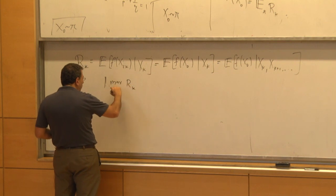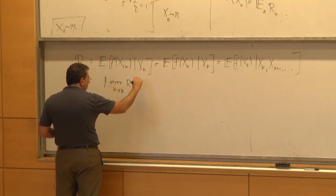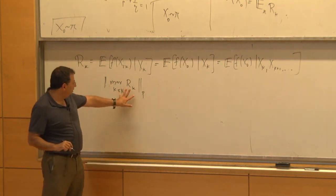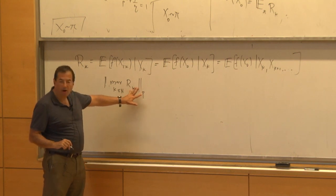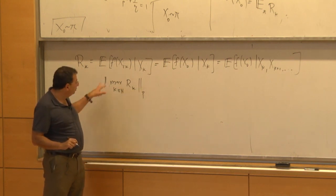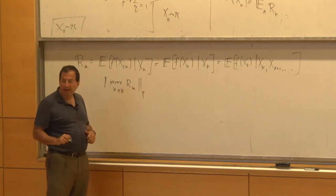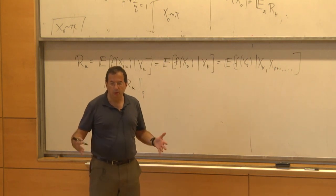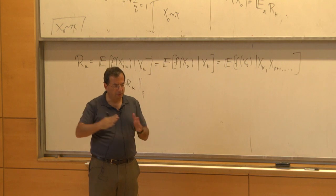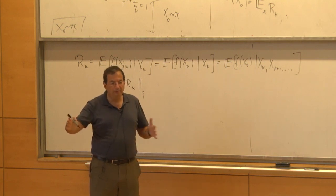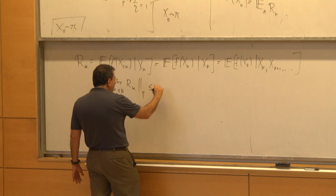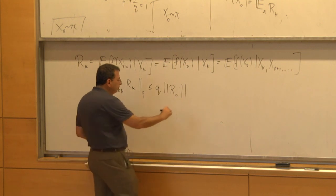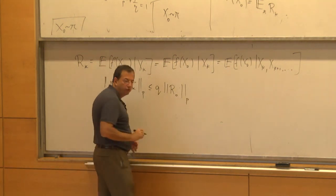We take max_{K ≤ N} of R_K — this is a random variable — and we want to bound its LP norm. Doob tells us that for a martingale, the LP norm is bounded by Q times the norm of the final element. For a reverse martingale, the final element of the martingale is the first element of the reverse martingale.